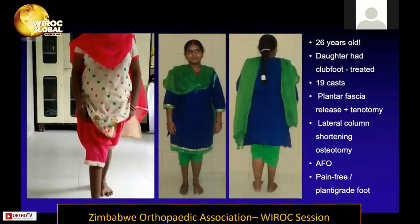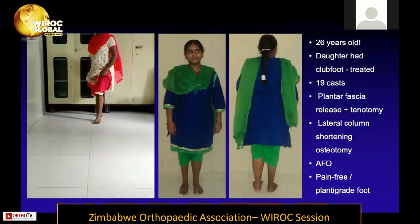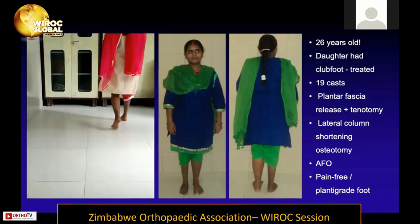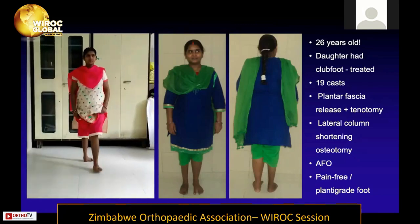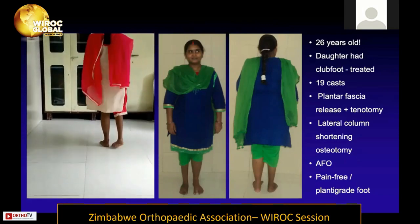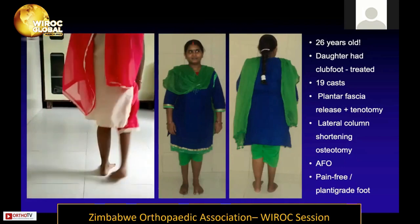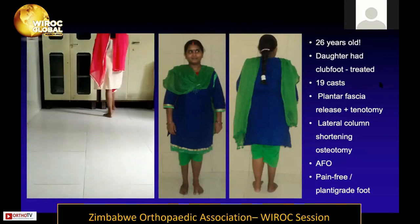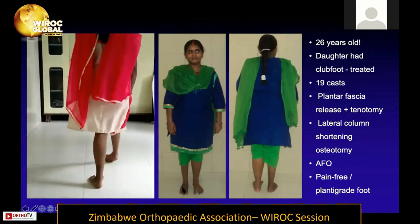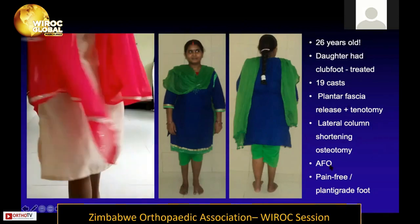To give an even broader perspective, here is a 26-year-old lady whose daughter had clubfoot treated by us. The father brought the wife from the village, asking if we could do the same for her. With 19 serial plasters followed by very limited surgery — a plantar fascia release, tendo Achillis tenotomy, and a lateral column shortening through the cuboid for a residual curved border — we achieved correction. Combining conservative treatment with very limited soft tissue surgery worked even at this older age.